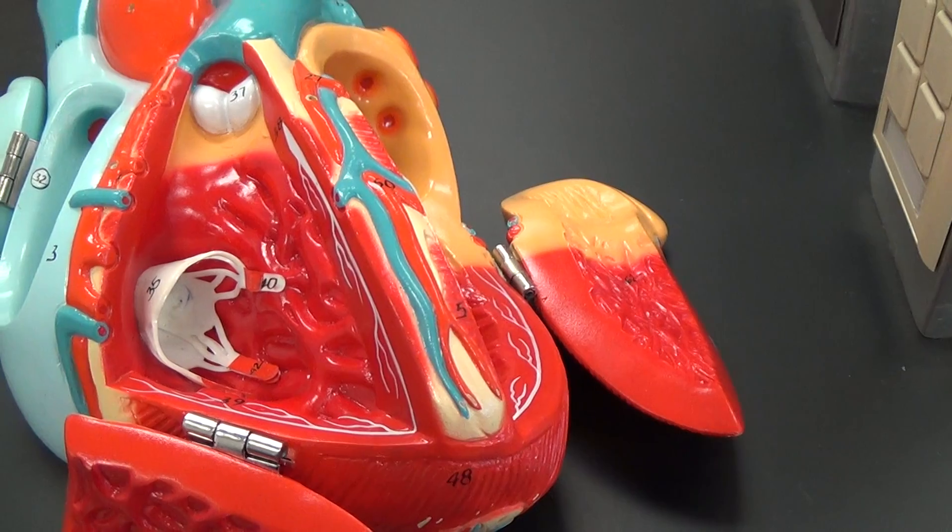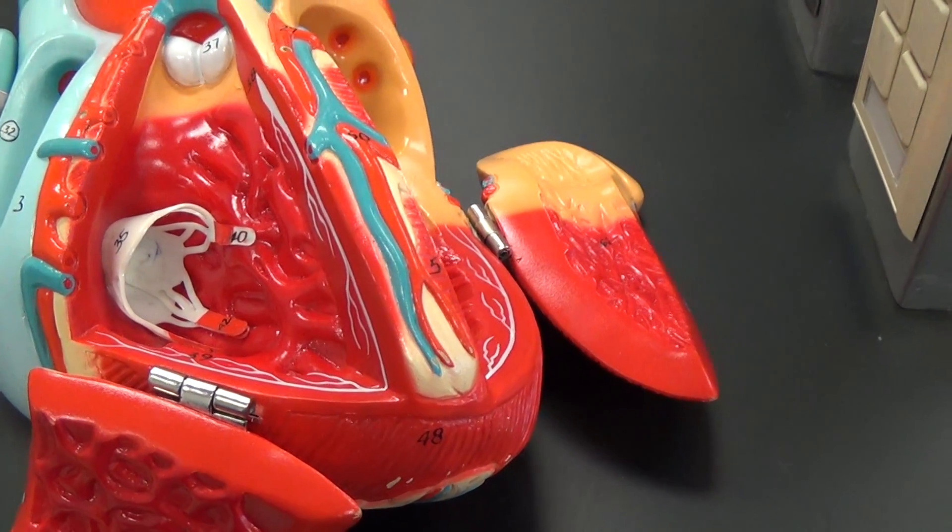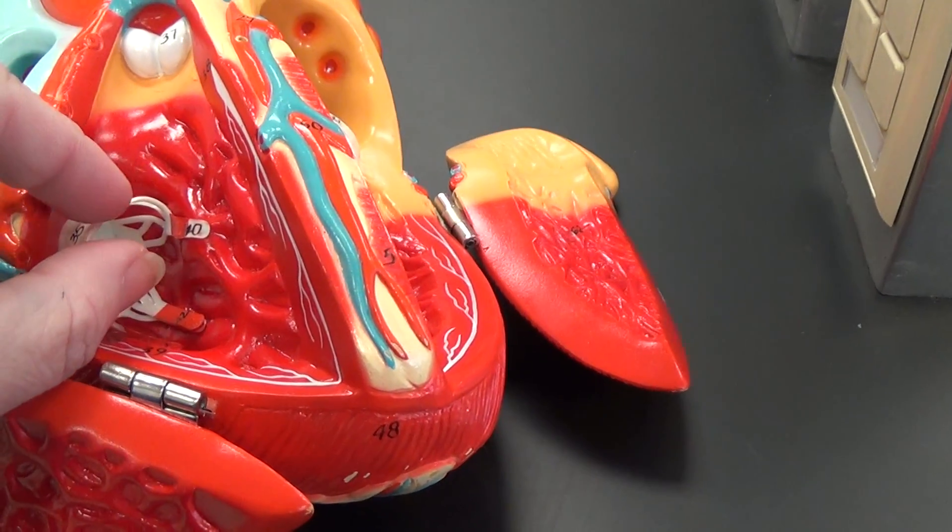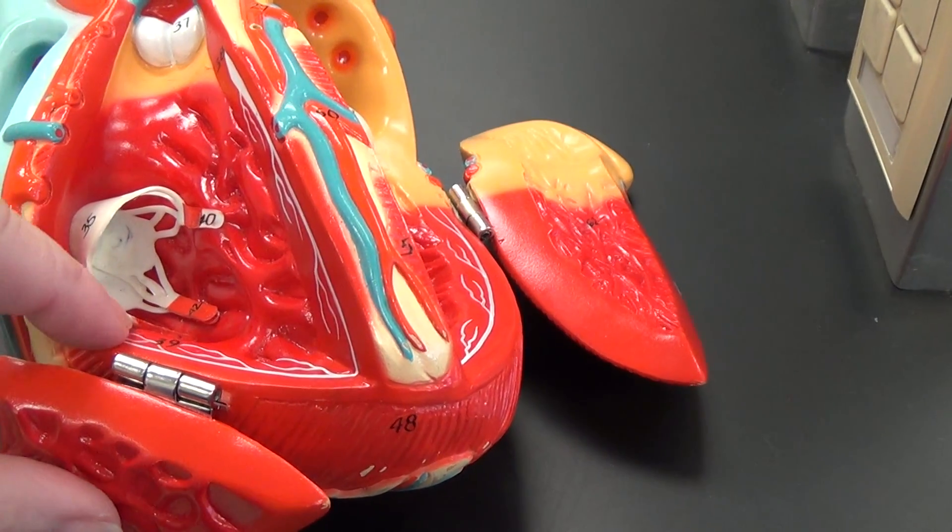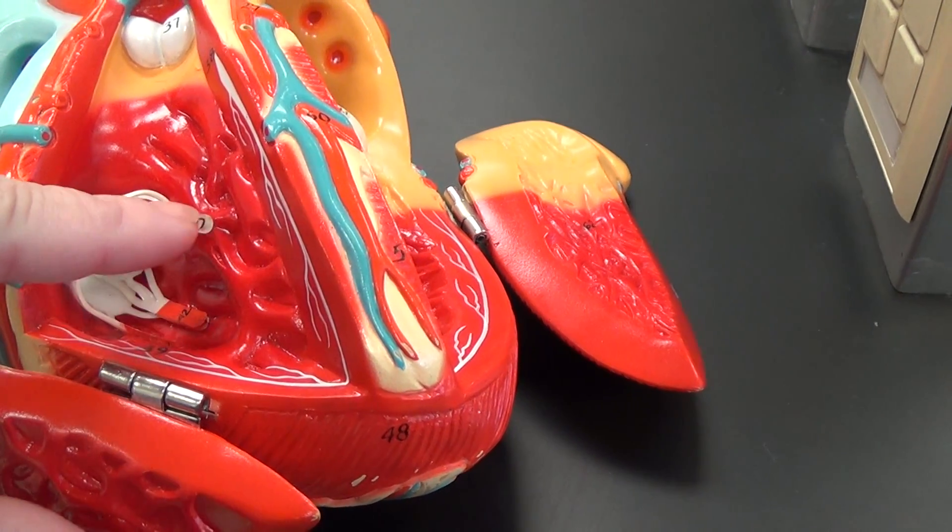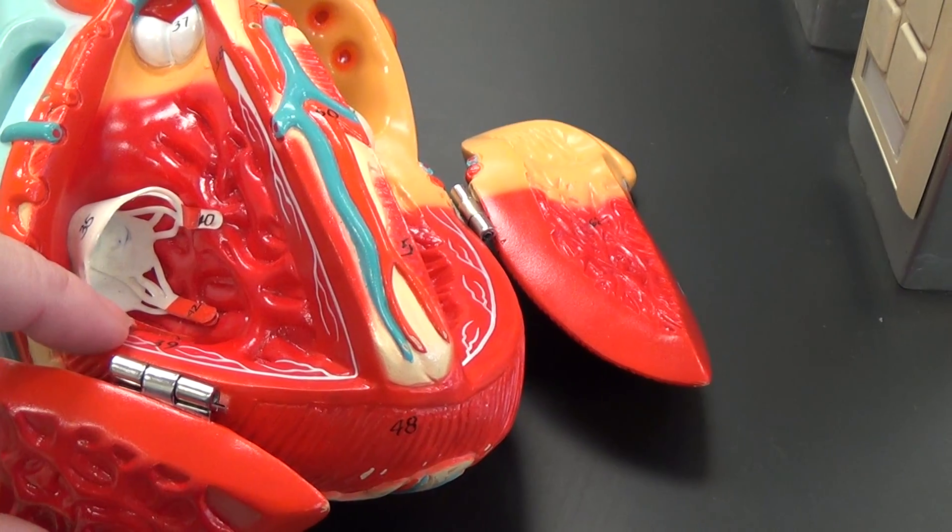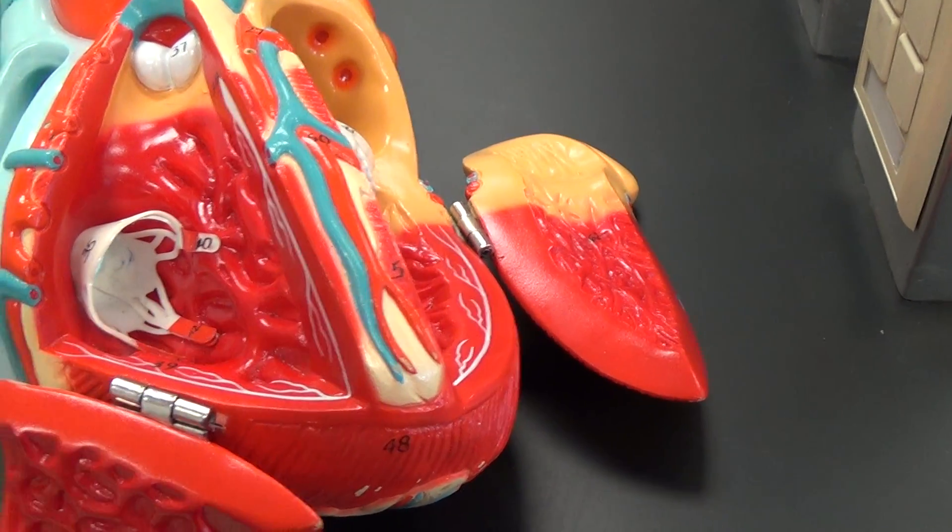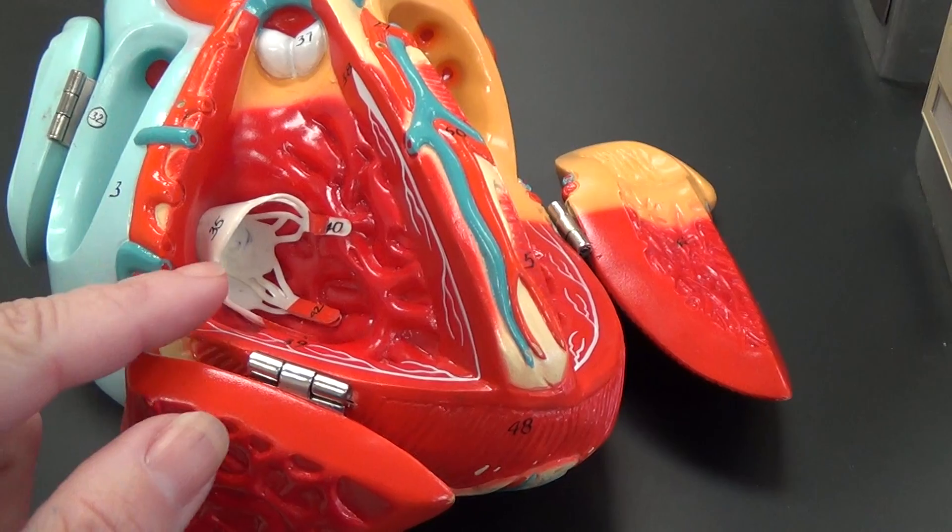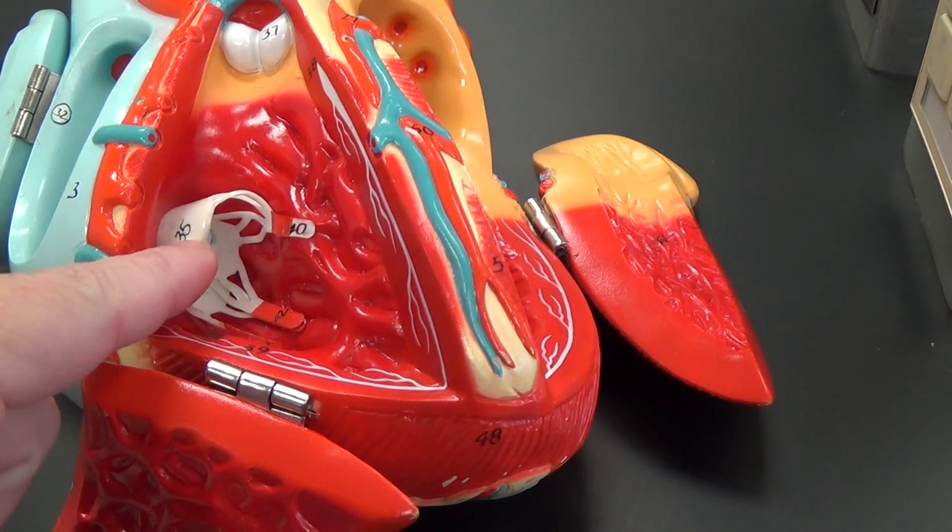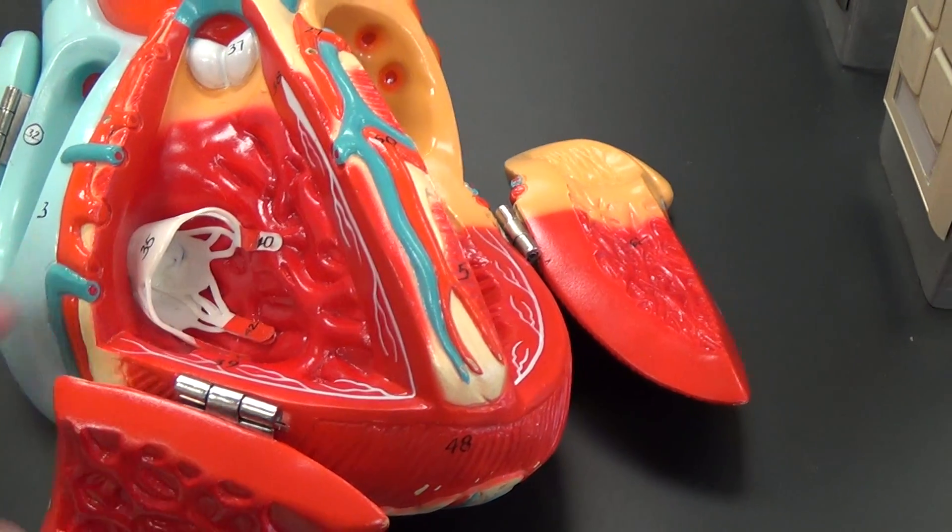When the papillary muscle contracts, it shortens. In so doing, it pulls on the valves. This little red bit here is part of the valve structure. When the papillary muscle contracts, it pulls on that, which then pulls on these flaps up here.